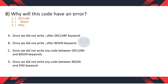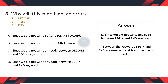Question 8. Why will this code have an error? A. Since we did not write a semicolon after the declare keyword. B. Since we did not write a semicolon after the begin keyword. C. Since we did not write any code between the declare and begin keywords. D. Since we did not write any code between the begin and end keywords. And the correct option is D. We must write at least one line of code between the begin and end keywords.